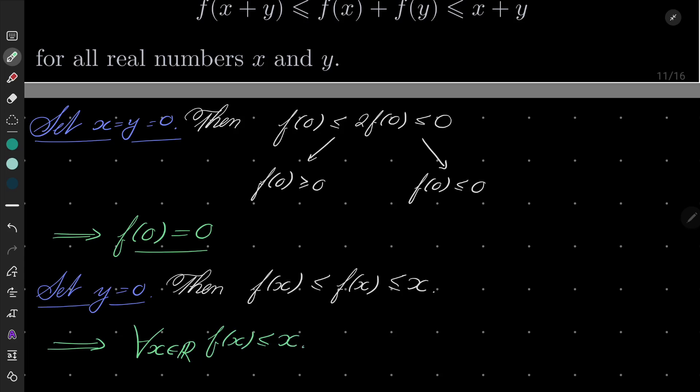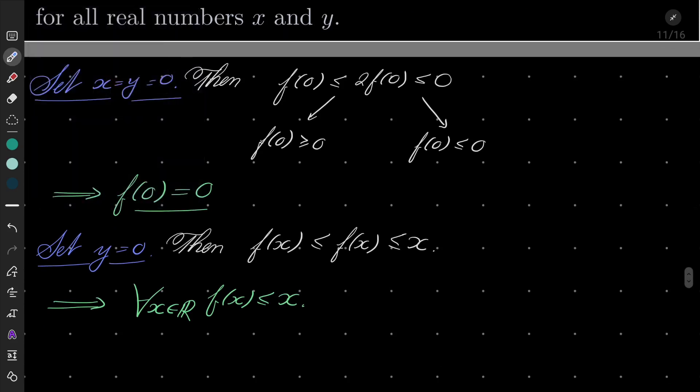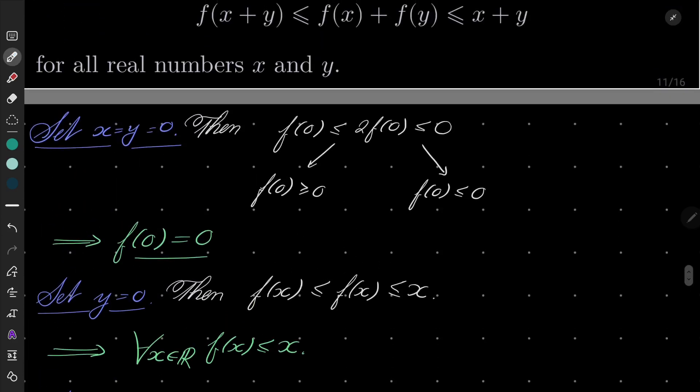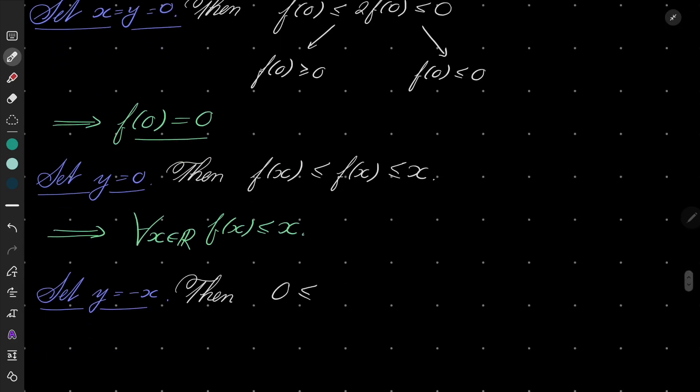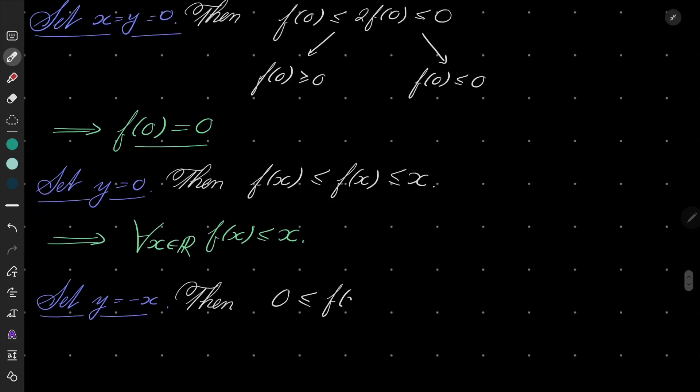Okay, now for something else. And finally, let's set y equals minus x. And then we get the following. Well, if we set y equal minus x, on the left hand side we have f(0), which is 0. 0 ≤ f(x) + f(-x).